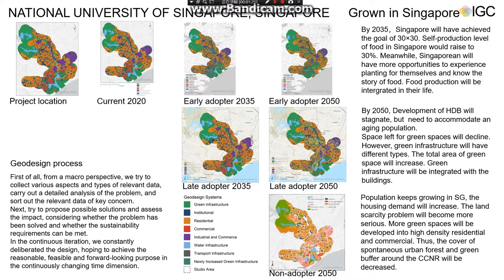Our geodesign process can be concluded as two main phases. Initially, we collect types of relevant data, carry out a detailed analysis of the problem, and sort out the relevant data of key concern. Then we propose possible solutions and assess the impacts, considering whether the problem has been solved and whether the sustainability requirements can be met. With this kind of continuous iteration, we constantly deliberate the design, hoping to achieve a reasonable, feasible, and forward-looking purpose across the continuously changing time dimension.